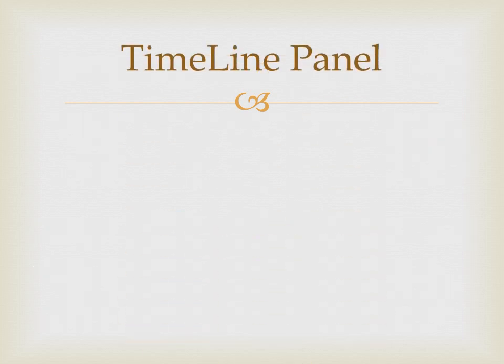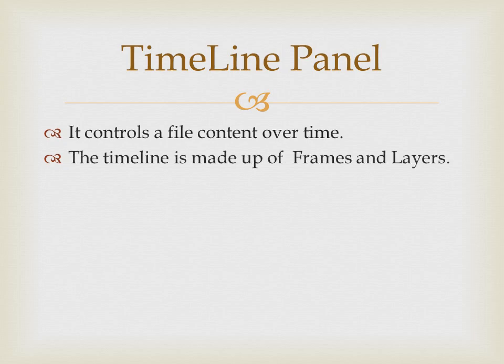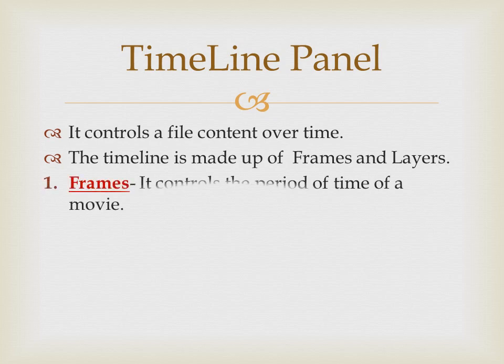The next very important topic is the timeline panel. The timeline panel plays an important role — it controls a file's content over time. The timeline is made up of frames and layers. Frames control the period of a movie. An animated movie is made up of several frames, each frame has some content, and these frames are displayed in series to play the movie.